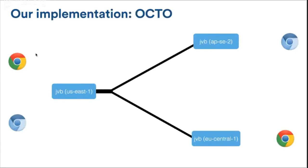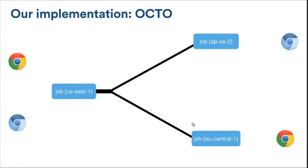At the media level, a single video bridge instance has a certain set of local participants — clients connected to it directly. Taking the bridge on the left as an example: it has two local clients, and it is connected via Octo to two more bridges, each of which has one client connected to them. On the Colibri protocol level, this looks like a single Octo channel with two targets: one target is the top-right bridge in Sydney, and the second target is the bottom-right bridge in Europe.